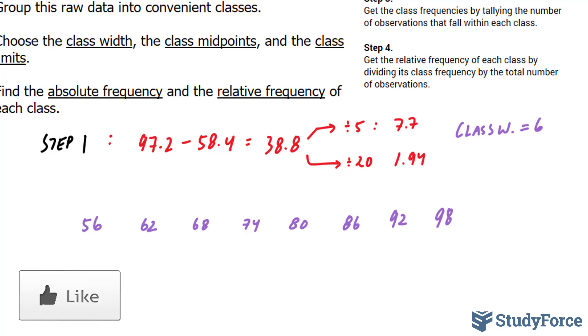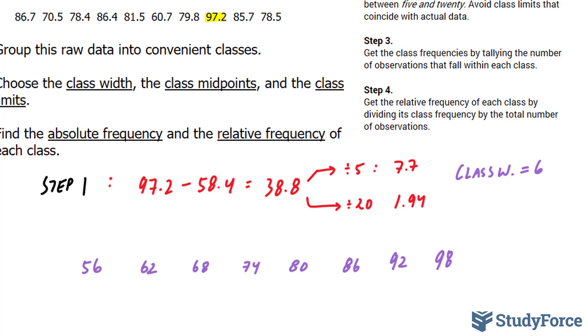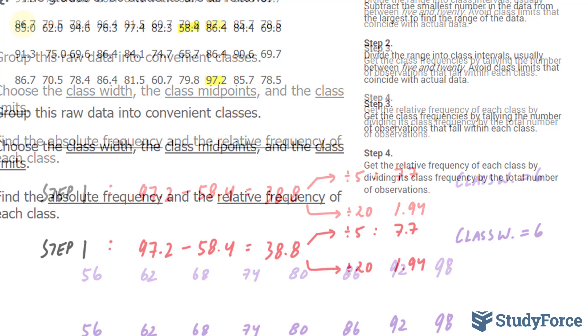The next step, which is outlined over here, is to get the class frequencies by tallying the number of observations that fall within each class. So I'm going to go ahead and create a table from these class limits and then tally up where each of these 30 observations fall within the limits defined below.